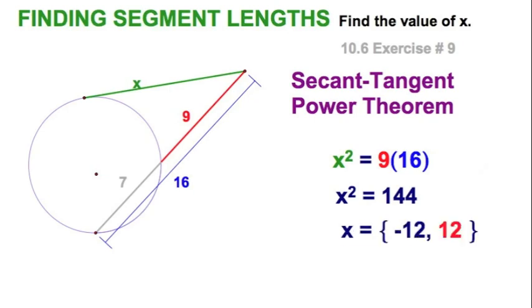We know that x is plus or minus 12. We would reject the negative 12 since this length can't be a negative. So, it must be 12. And, just substituting in there, I can see 12 squared equals 9 times 16. So, it checks out okay.